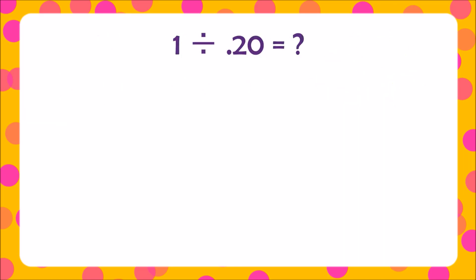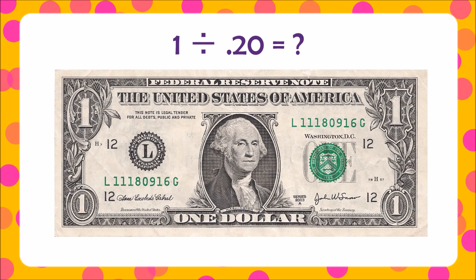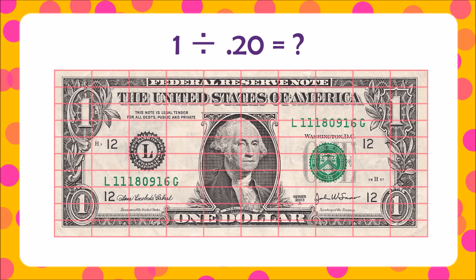As our hint suggests, you can solve this problem by dividing or repeatedly subtracting 20 hundredths to see how many times we can take 20 hundredths from a whole dollar. To help visualize this, let's start with a whole dollar. Now let's break this dollar into hundredths. Then we're going to repeatedly take away 20 hundredths of the dollar.